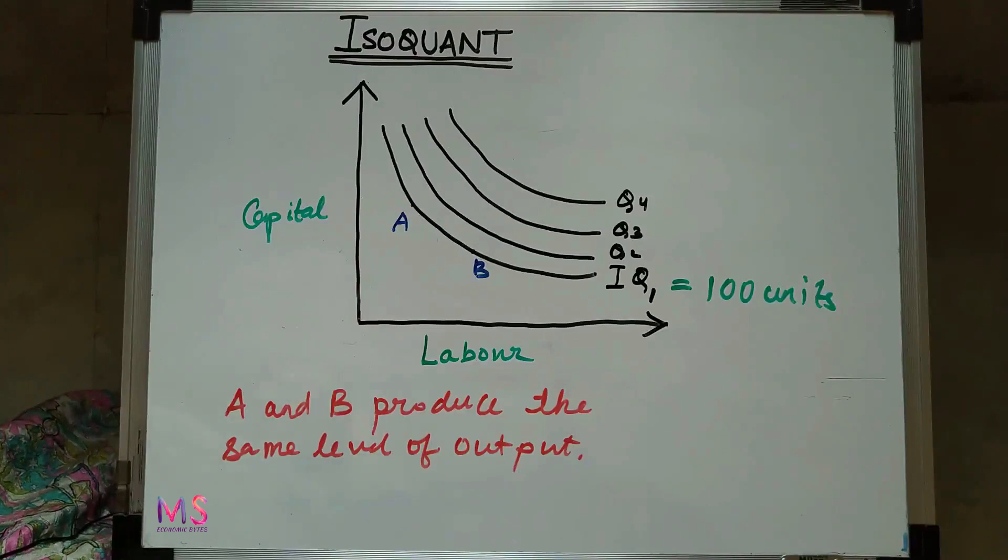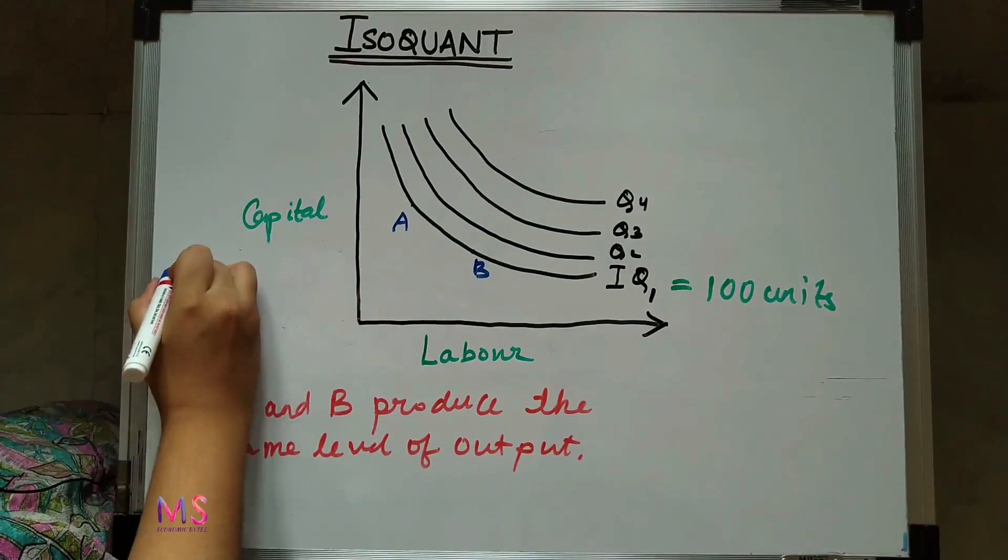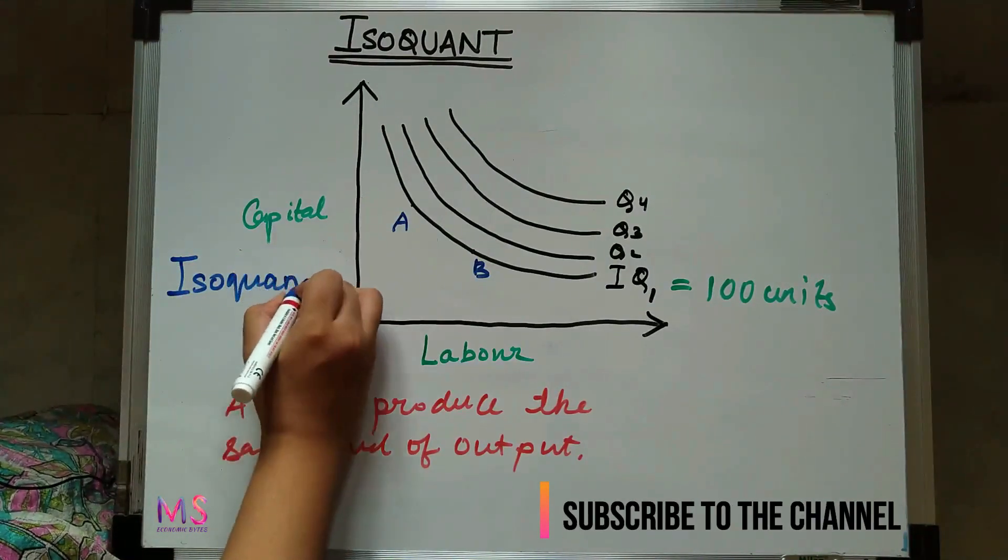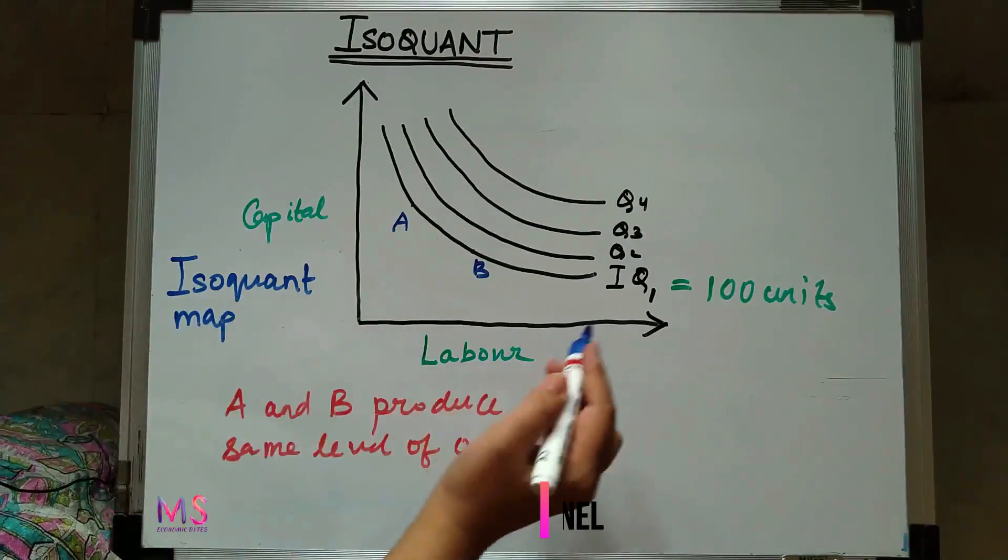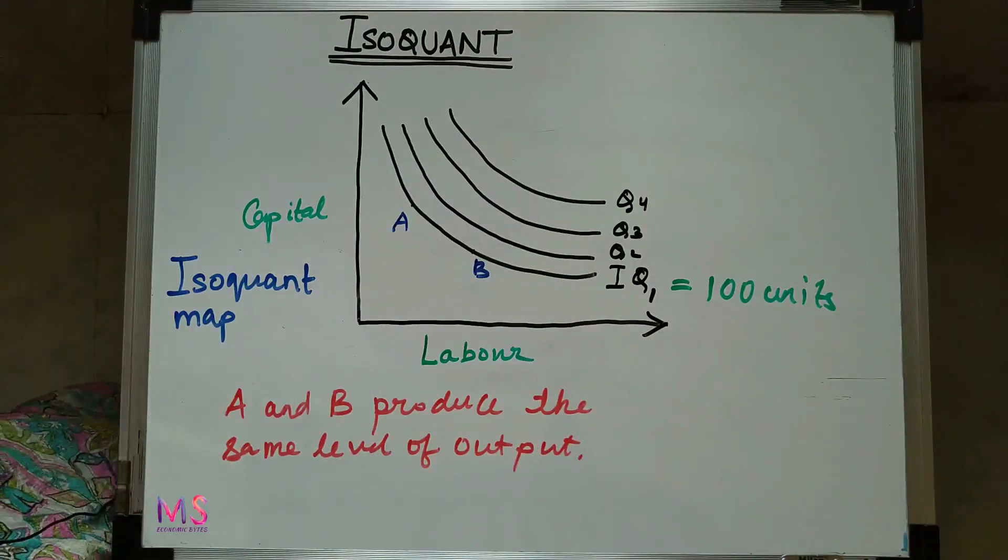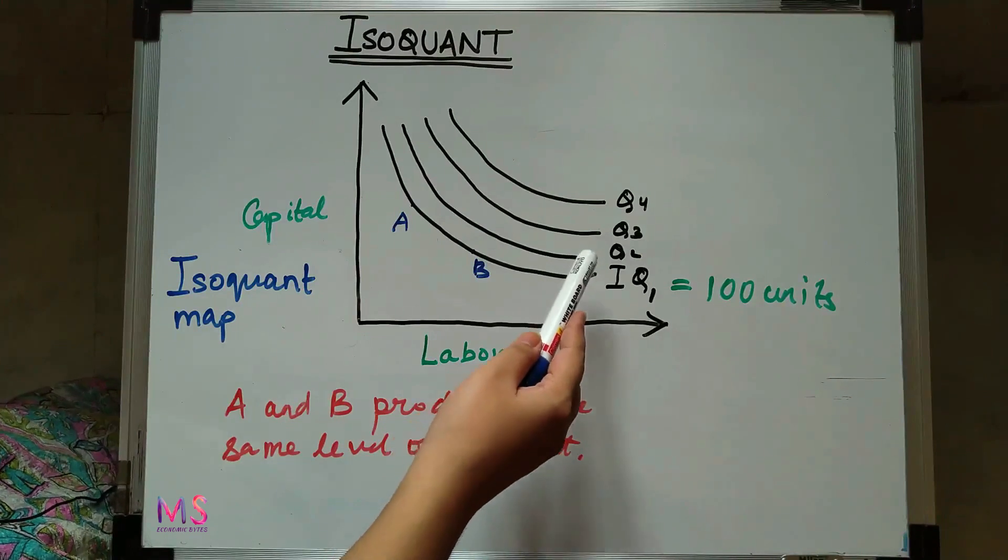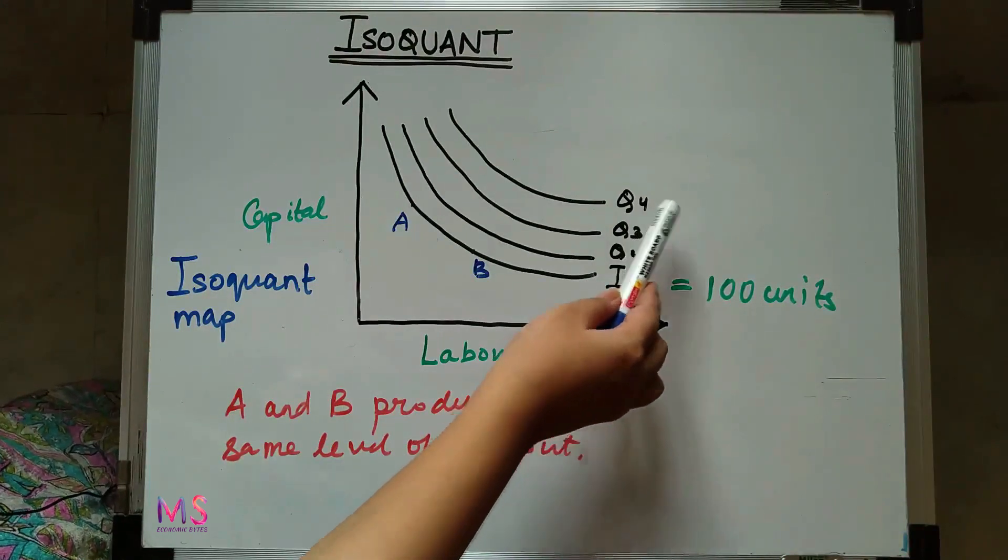So here we have an isoquant map. An isoquant map consists of various isoquants. In this particular diagram, we have four isoquants: IQ1, IQ2, IQ3, and IQ4. Each of these isoquants has a specified level of output.